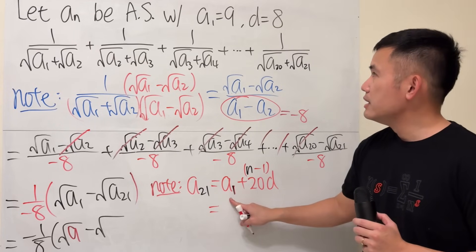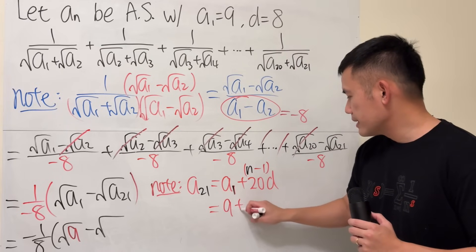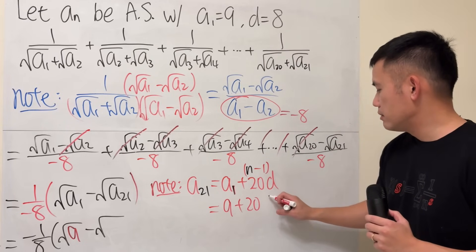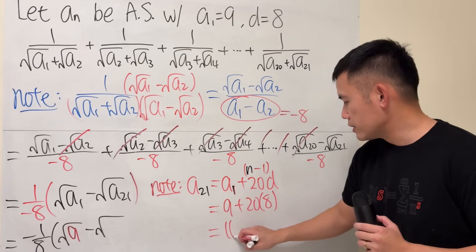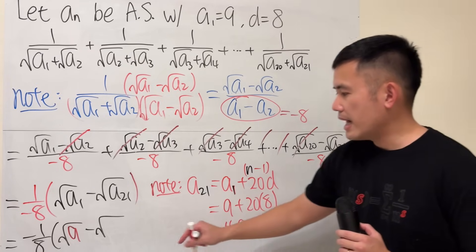Anyways, a1 is 9 plus 20 times the common difference, which is 8. So, all in all, that's 169. Put that in here.